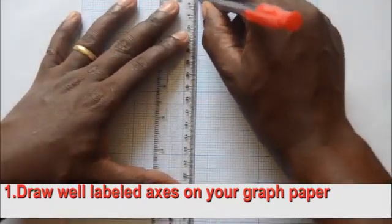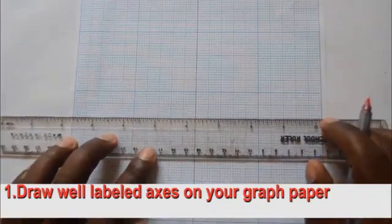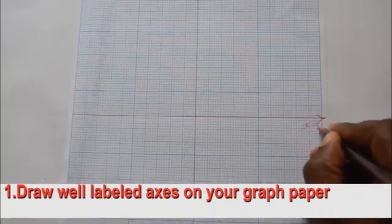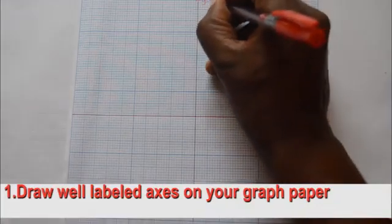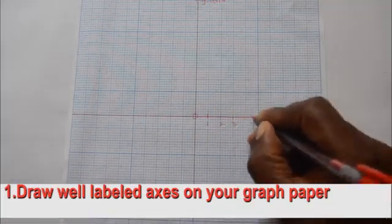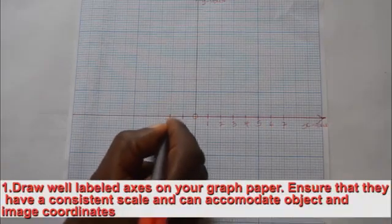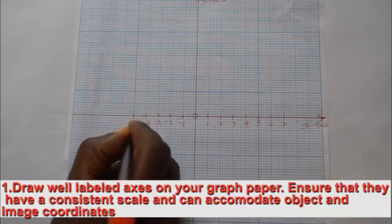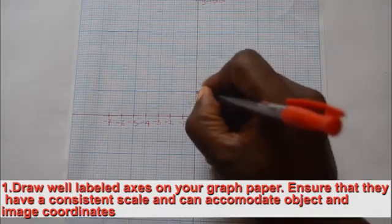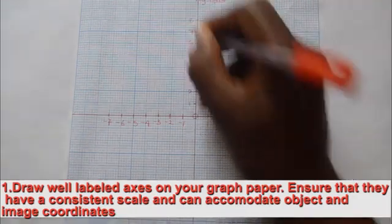Draw well-labeled axes on squared paper, commonly known as graph paper. Ensure the axes have a consistent scale and are strategically placed to give room for object and image coordinates.